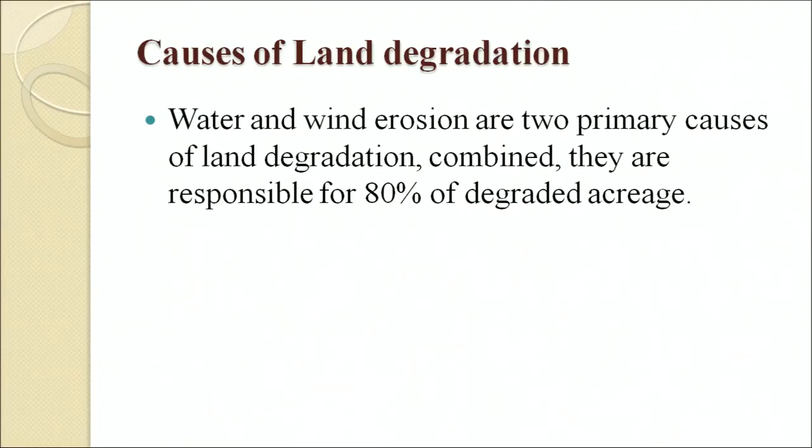Wind and water erosion are the two primary causes of land degradation. Combined they are responsible for 80 percent of degraded land. Some major causes of land degradation are the use of agrochemicals including chemical fertilizers and pesticides, cultivation of high-yielding plant varieties and excessive irrigation. Other causes include deforestation, overgrazing, commercial development, quarrying of sand, ore and minerals, monoculture and soil erosion.